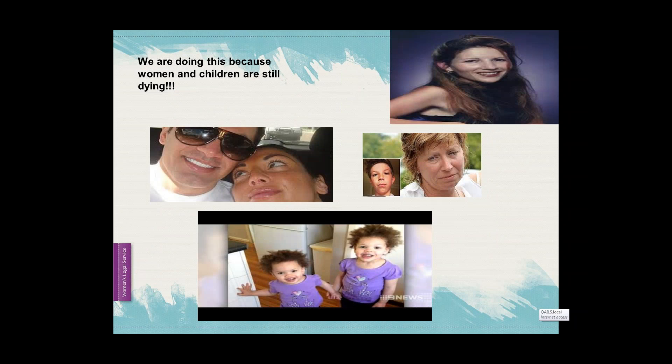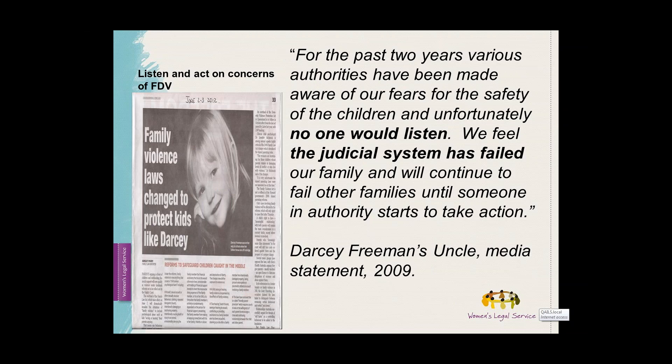The reason that we decided to put together this training package is that the statistics are pretty startling. At least one woman on average a week is killed in Australia by a partner or ex-partner. So far in 2015, there is an average of two women per week being killed in these circumstances. For children who have been killed in the domestic violence contact context, the perpetrator's relationship with the children has been described as secondary to his intermediary abuse of them to abuse their mother. In research by Carol Johnson in Western Australia of fathers that killed their children in the context of separation, she found that domestic violence was a significant factor in all cases.